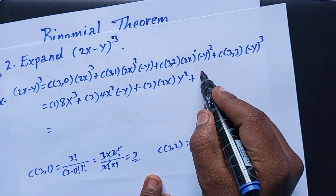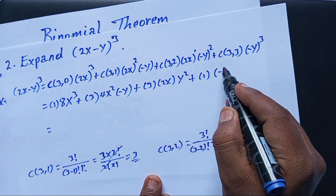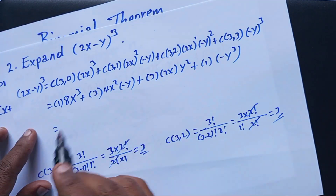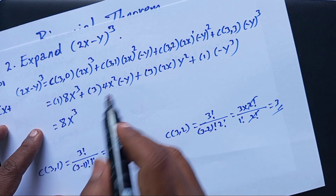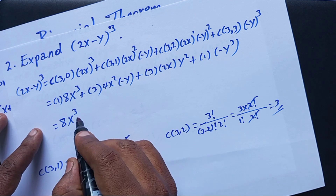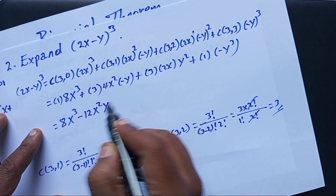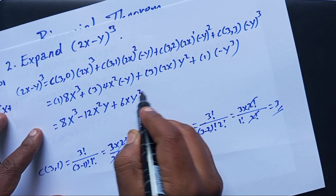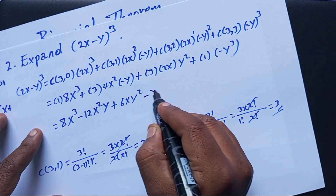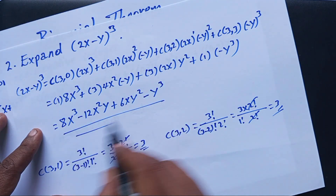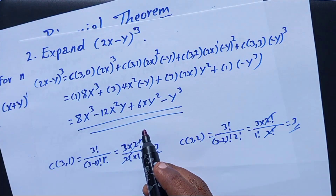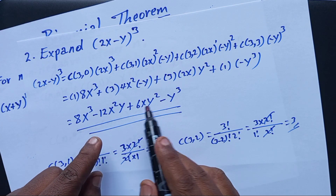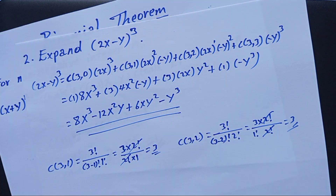And C(3,3) is 1, times (-y)^3 gives -y^3. Combining all terms: 8x^3 - 12x^2 y + 6xy^2 - y^3. The coefficients are: x^3 has 8, x^2 y has -12, xy^2 has 6, and y^3 has -1.